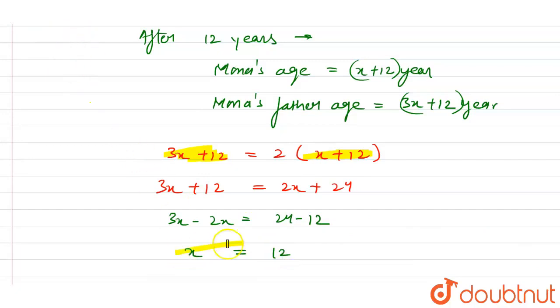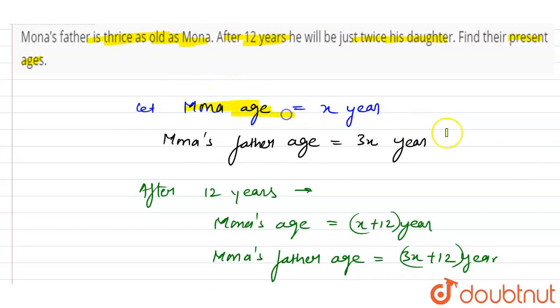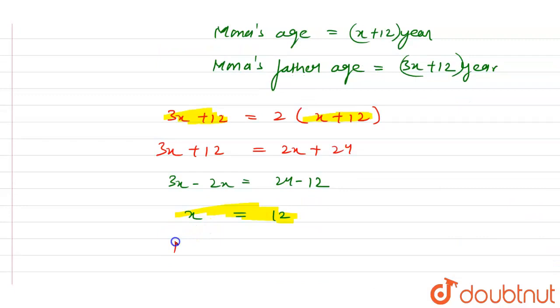Here we assumed that x equals Mona's age. So from here we get Mona's age equals 12 years. Mona's age is 12 years.